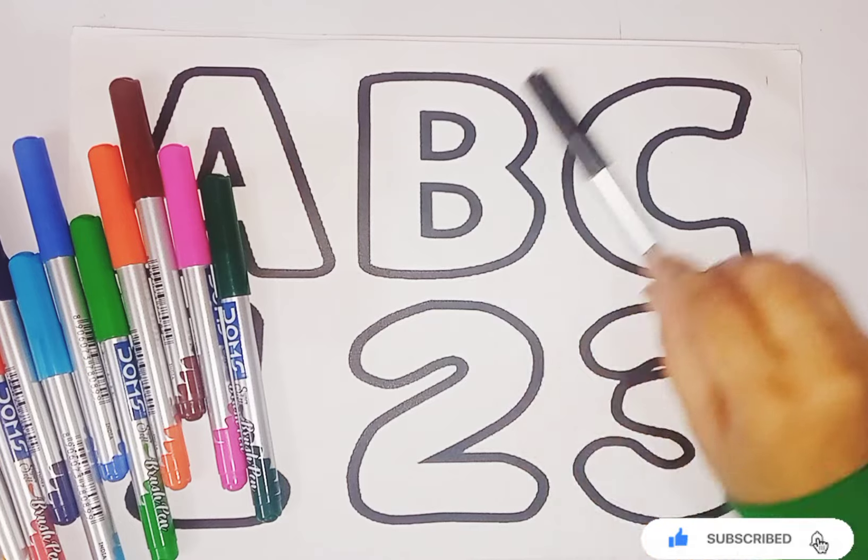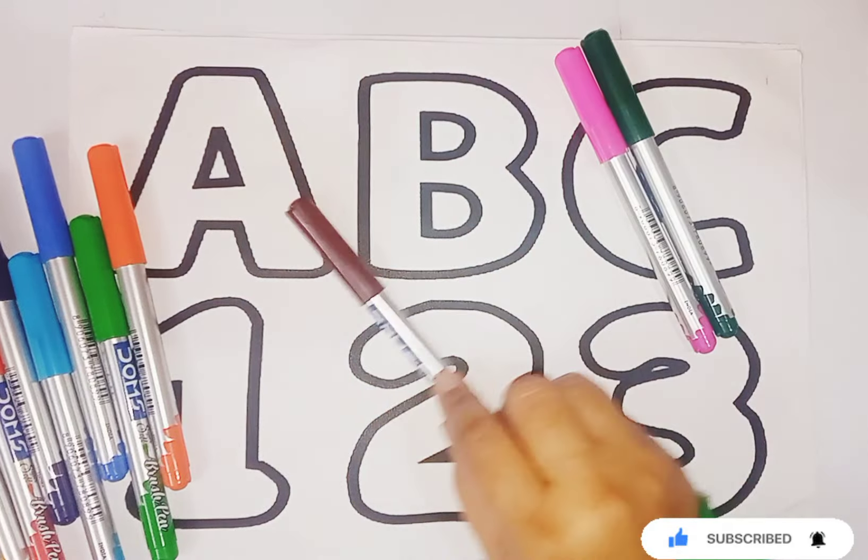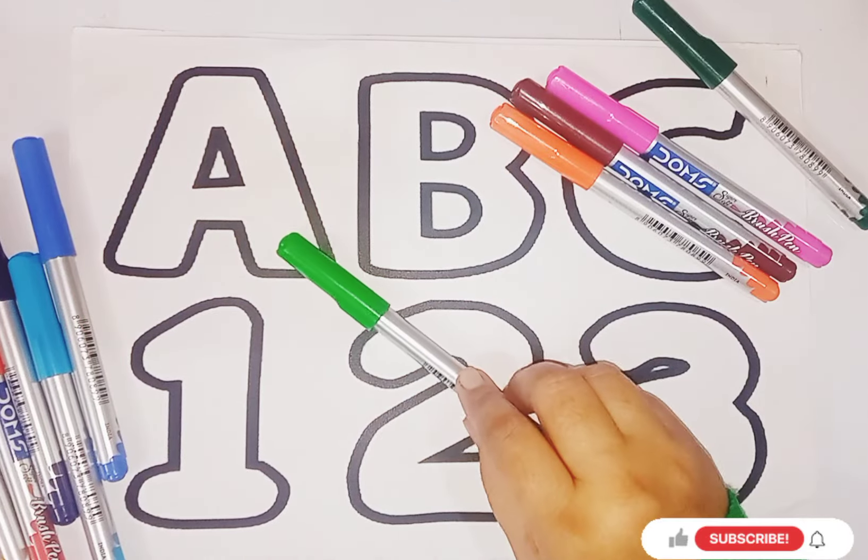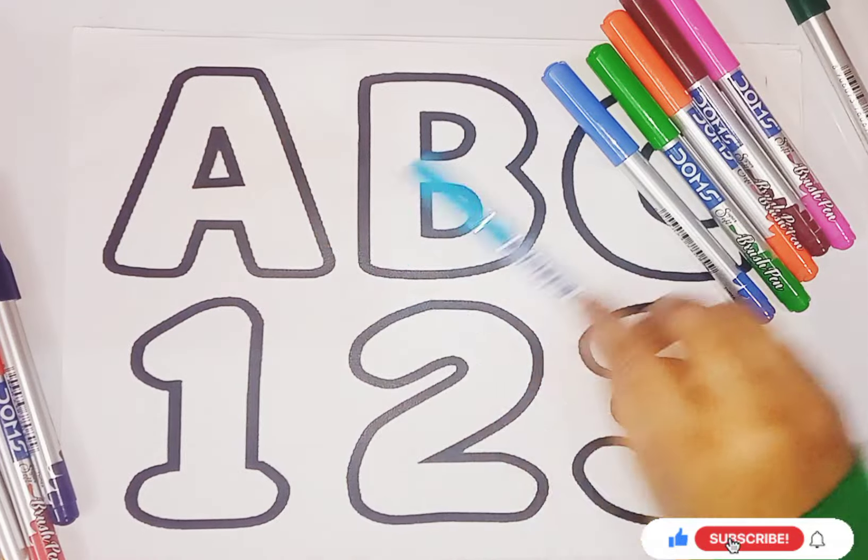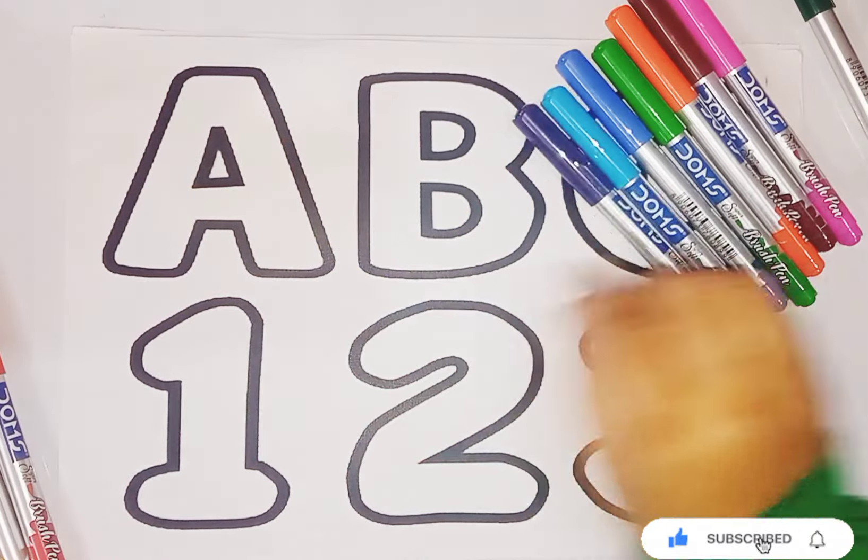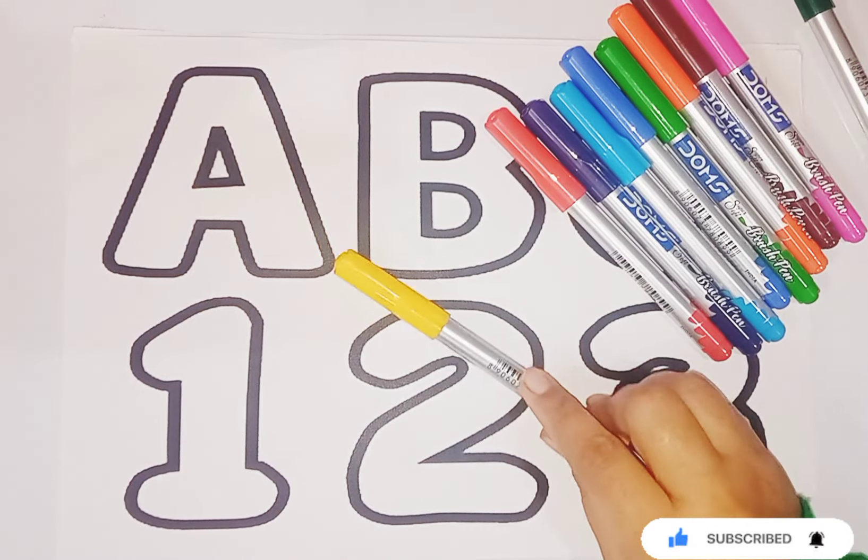This is the black color, green color, pink color, brown color, orange color, light green color, blue color, sky blue color, violet color, red color, and this one is yellow color.